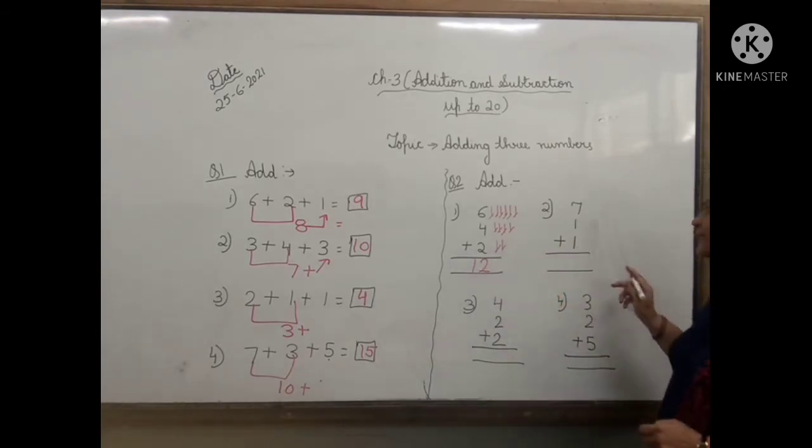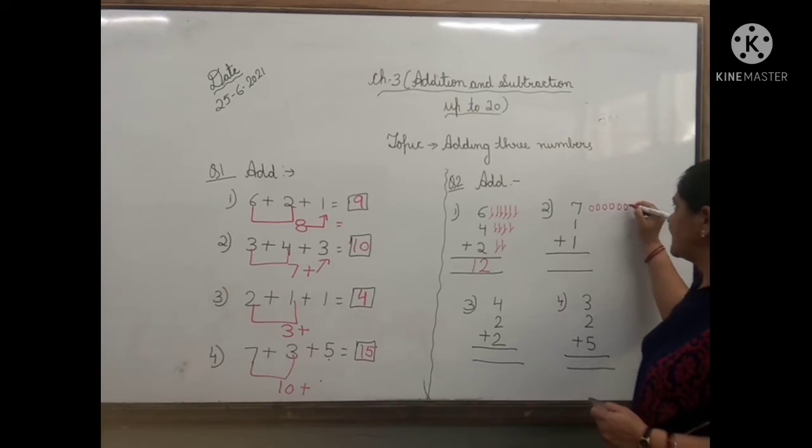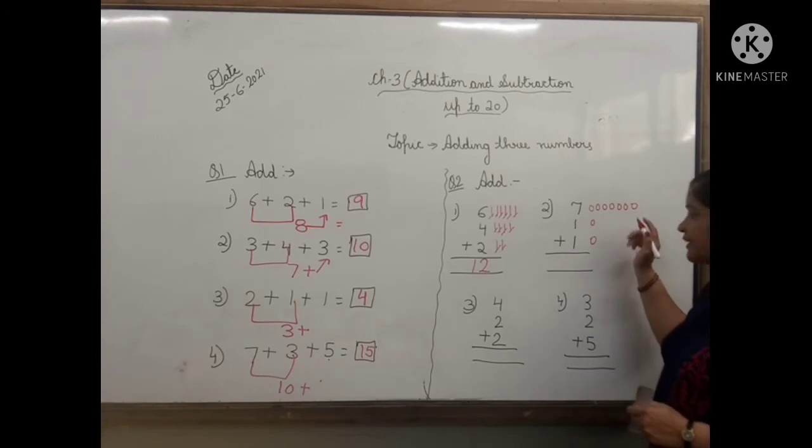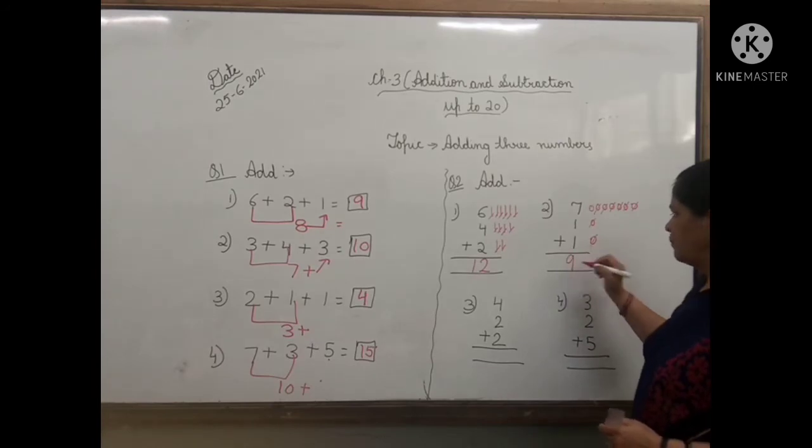The next one is 7, 1 and 1. So again, 1, 2, 3, 4, 5, 6, 7. Then 1 and 1. Now count all the circles. 1, 2, 3, 4, 5, 6, 7, 8, 9. Answer will be 9.